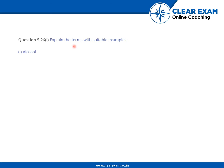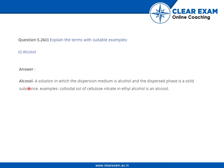We have to explain the terms with suitable examples. First is alcosol. Alcosol is a solution in which the dispersion medium is alcohol and the dispersed phase is a solid substance. An example is the colloidal solution of cellulose nitrate in ethyl alcohol — that is an alcosol.